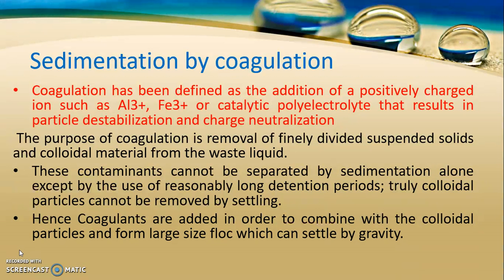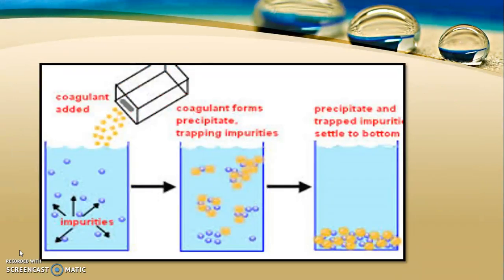The purpose of coagulation is the removal of finely divided suspended solids and colloidal material from the waste liquid. These contaminants cannot be separated by sedimentation alone except by using very long detention periods, which is not feasible. Therefore, these particles have to be removed by adding coagulants. This picture shows the impurities in suspended motion in water; when coagulants are added, they combine, increase in size, and settle down by gravity.